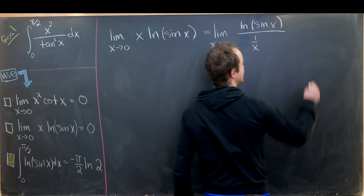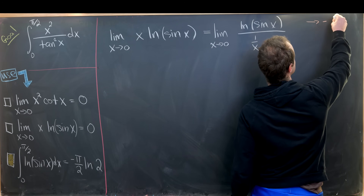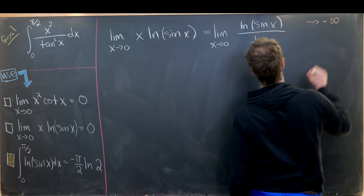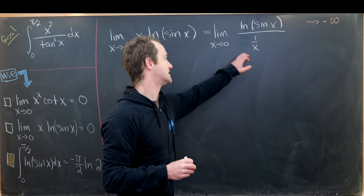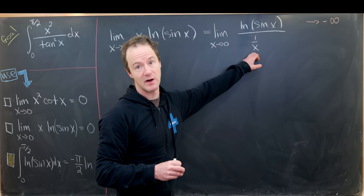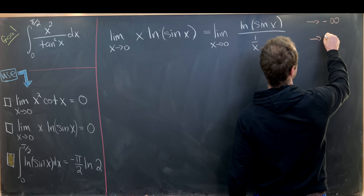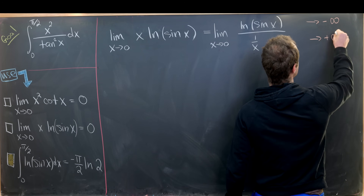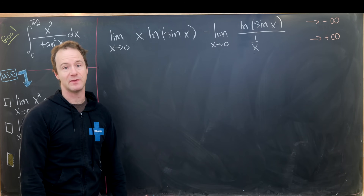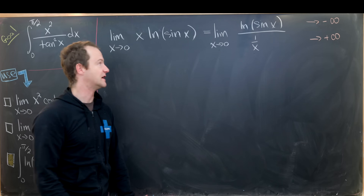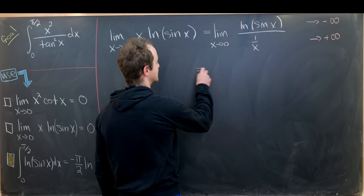As x→0⁺ in the denominator, 1/x tends to +∞. So we have an indeterminate form of type ∞/∞, which means we're able to apply L'Hôpital's rule.